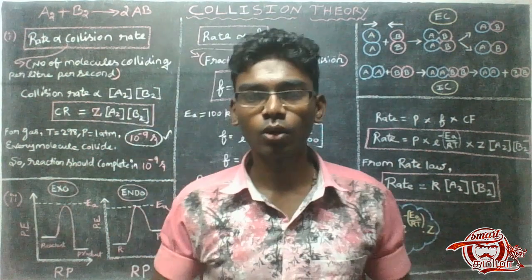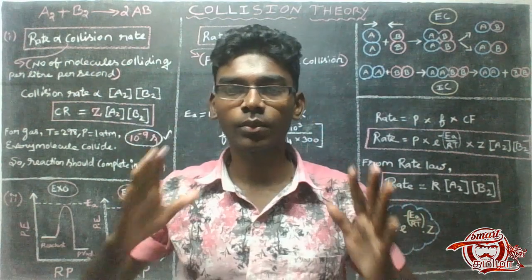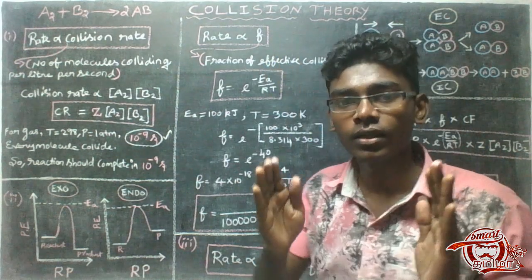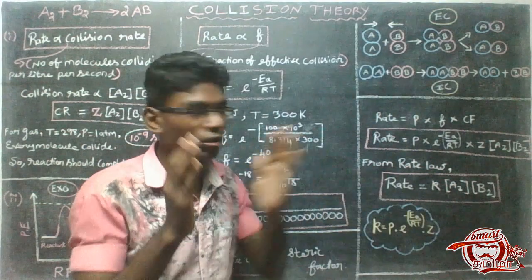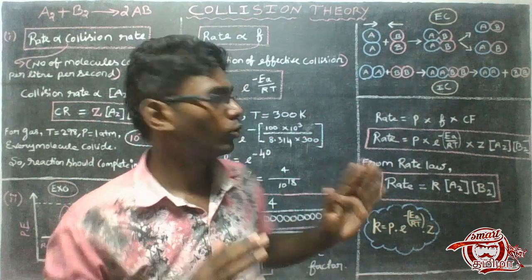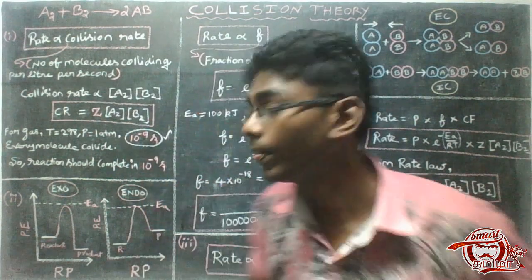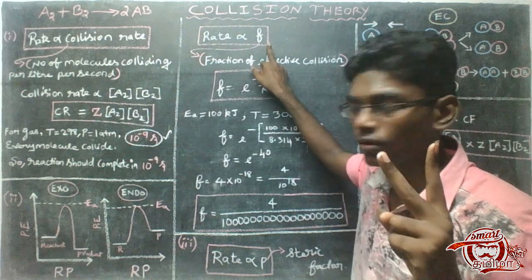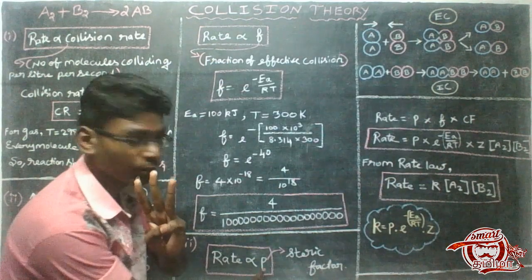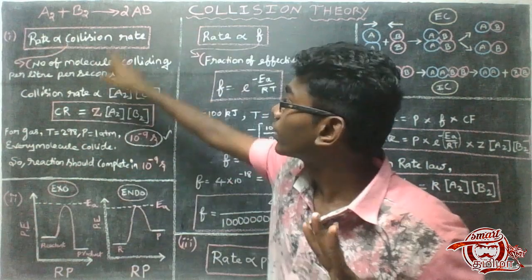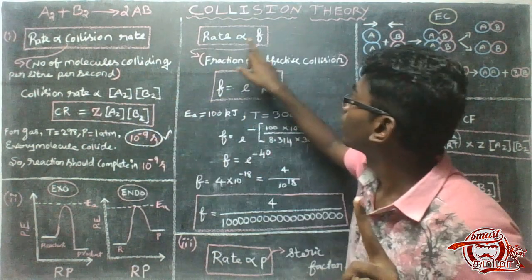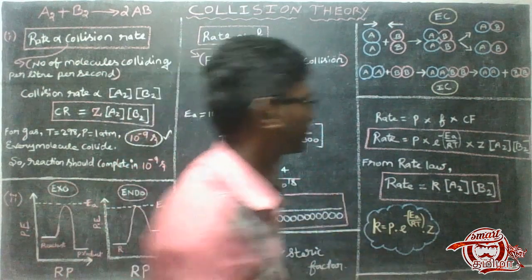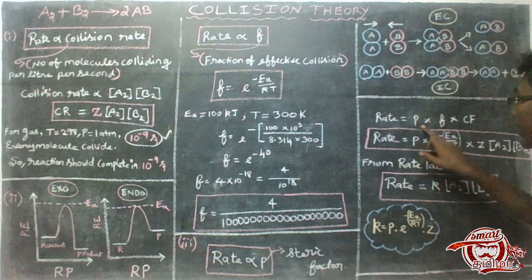So the issue is not one — collision rate of A and B is not enough. Two: effective collision — that is the active energy. The moon is in the correct position. This is the reaction rate of 3 issues. If you look at the rate proportional to collision rate, the rate proportional to effective collision, the rate proportional to peak — that is the steric factor. Rate equals P times F times Z.